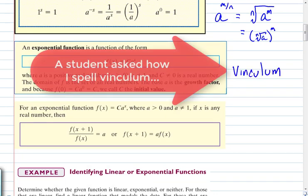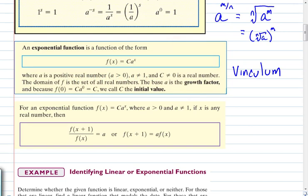For any exponential function, if X is any real number, this property holds: f(x+1)/f(x) = a. It says if we take the ratio of consecutive terms — from X to X plus 1 — we end up with the constant growth factor a. We're going to use this to figure out whether a list of values represents an exponential function, a linear function, or neither.